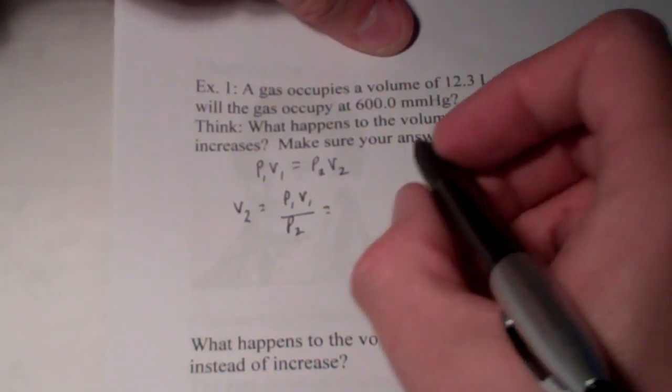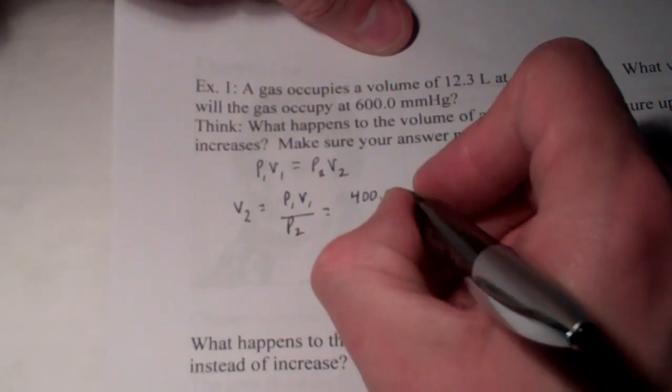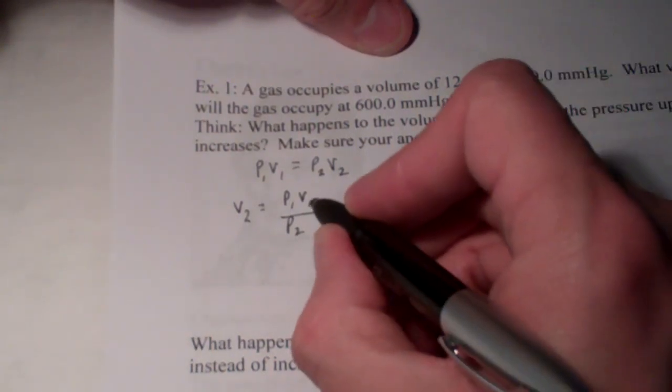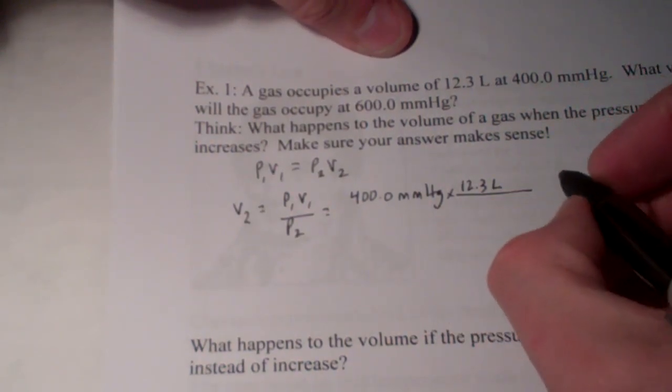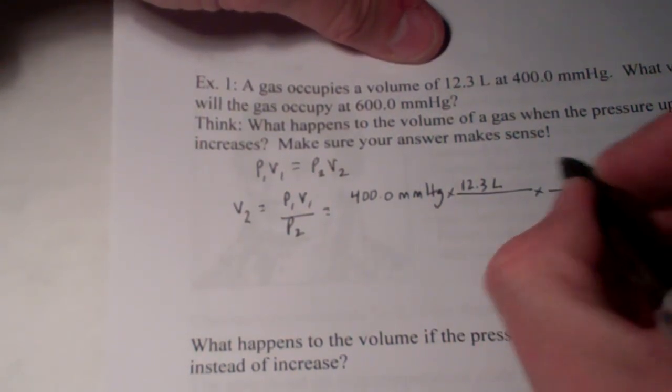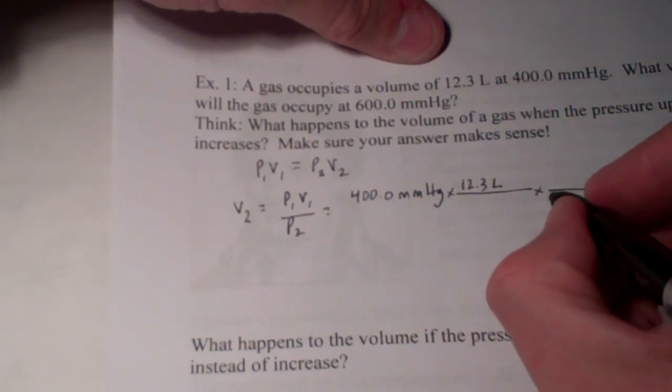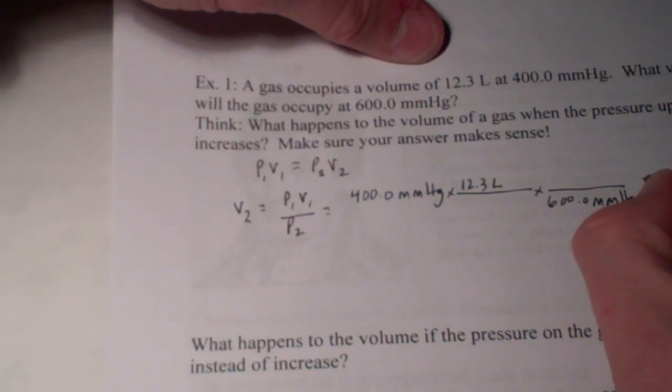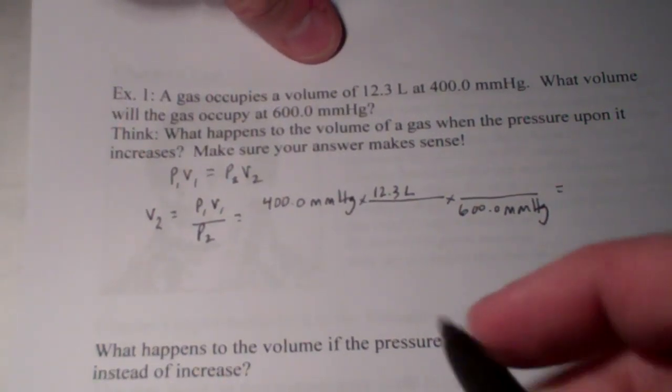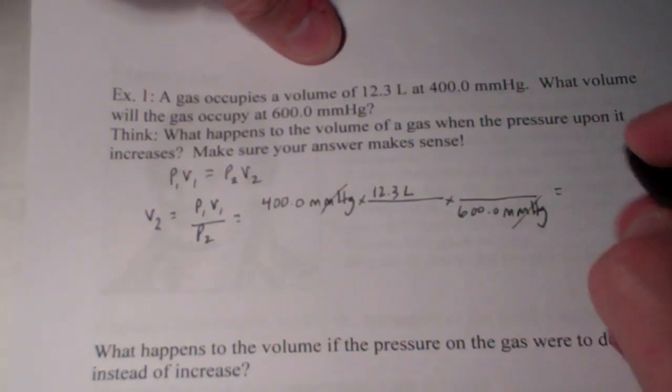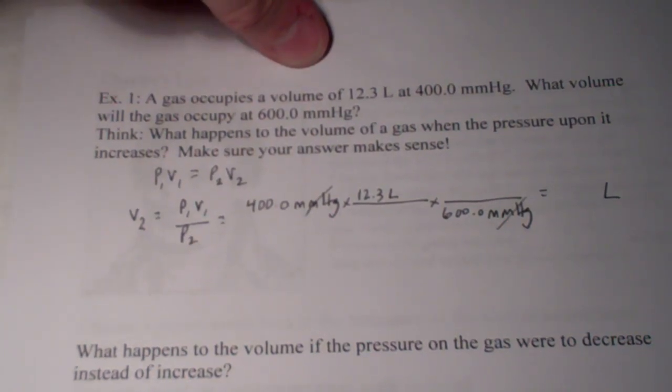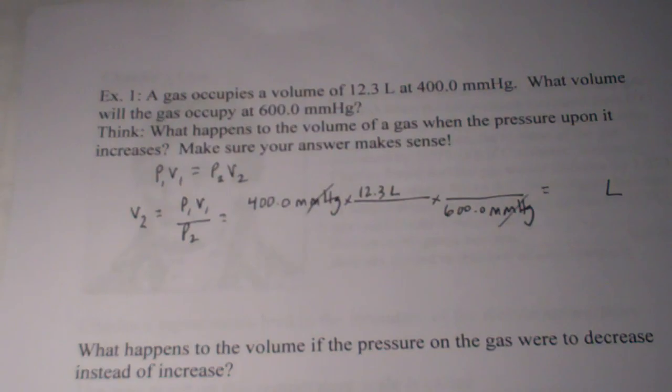Notice I've just divided both sides by P2. So V2 is by itself. So P1, 400.0 millimeters of mercury times V1, 12.3 liters divided by P2, 600.0 millimeters of mercury. So you'll notice that the pressure units divide out. And we're left with our final volume. And that will, of course, be in liters.